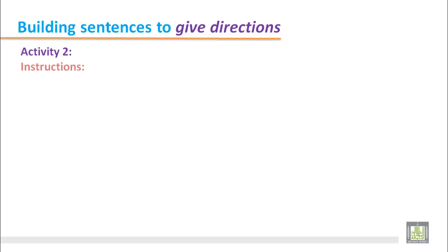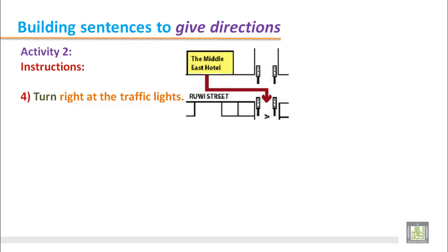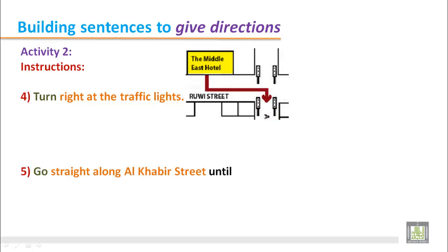Activity 2. Instructions. After that, turn right at the traffic lights. You can see in the picture that when you reach the traffic lights, you will have to turn right. Go straight until you come to the traffic lights and then turn right. Number 5.